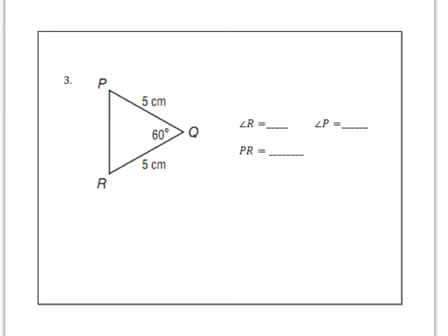So on this problem, it says find the measure of angle R, angle P, and the distance from P to R. The first thing I notice is I have 5 centimeters and 5 centimeters, two equal sides. So if I go across, angle P and angle R should be equal. Now this other angle, angle Q, is 60. So if I start out by doing 180 minus 60, I have 120 degrees left for the other two angles. But they're the same size, and so we have to take 120 and break it into two equal parts, which is 60. 120 divided by 2 is 60.